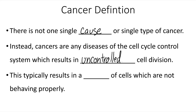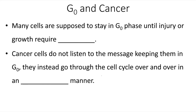This typically results in a mass of cells which are not behaving properly. Many cells are supposed to stay in the G0 phase until injury or growth require cell division. However, cancer cells do not listen to that message keeping them in G0. Instead, they go through the cell cycle over and over in an uncontrolled manner.